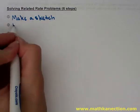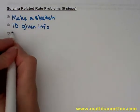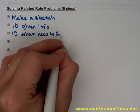Continuing on with related rates, there are six steps. You want to make a sketch, identify the given information, and identify what you need to find.